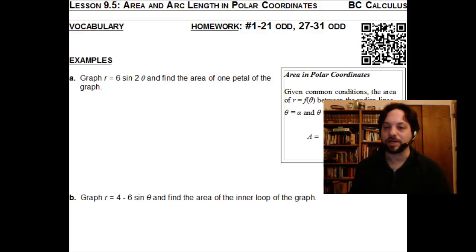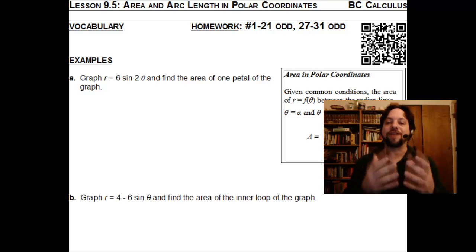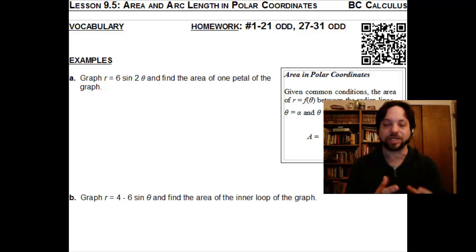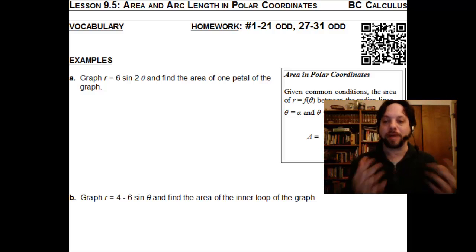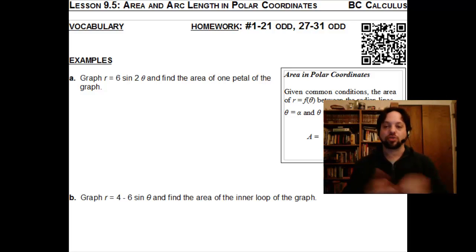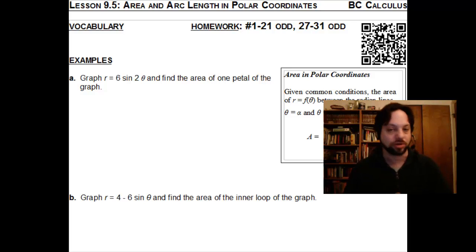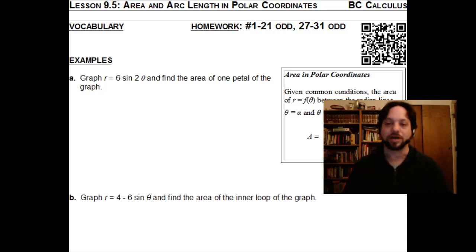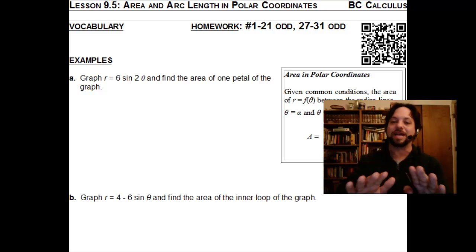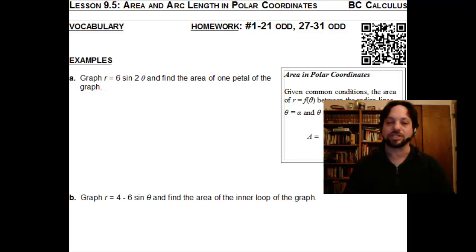In Lesson 9.5, Area and Arc Length in Polar Coordinates, we're going to explore how to find the area of a polar region — the area of a region bounded by a polar graph. We're going to look at things like rose petals and inner loops. We won't deal with arc length, although it is in the title; it's not covered on the BC exam, so we'll just deal with area in polar graphs.